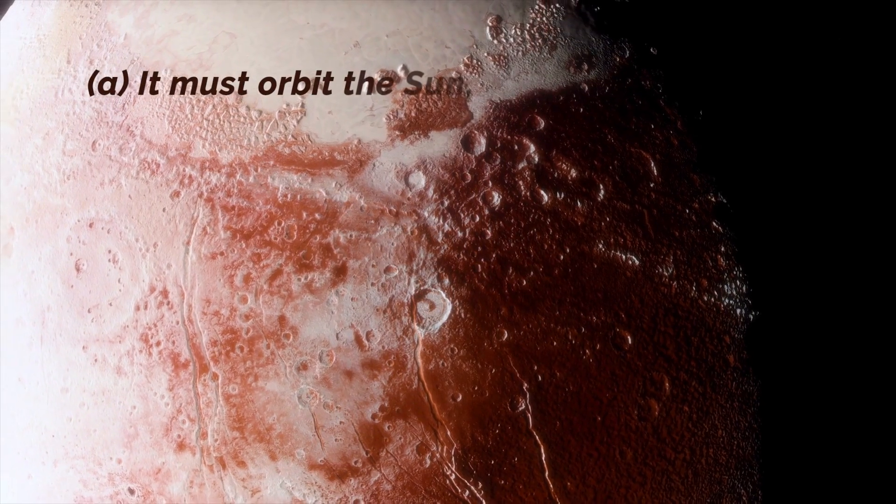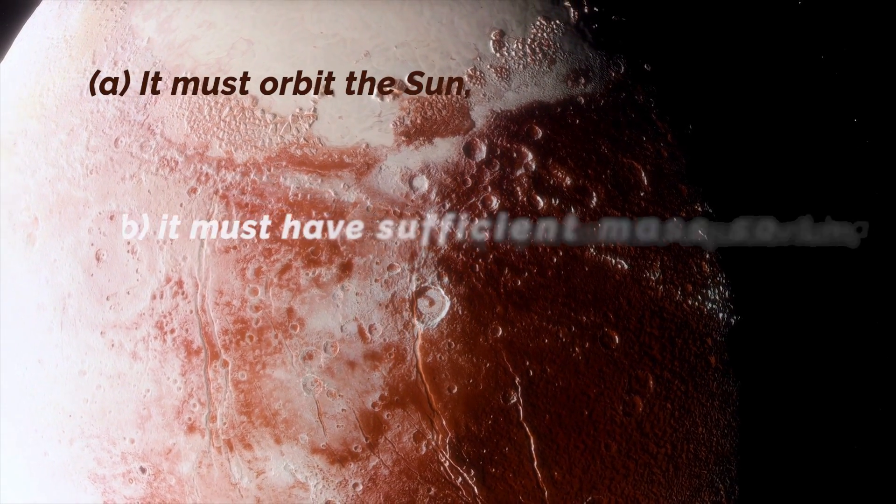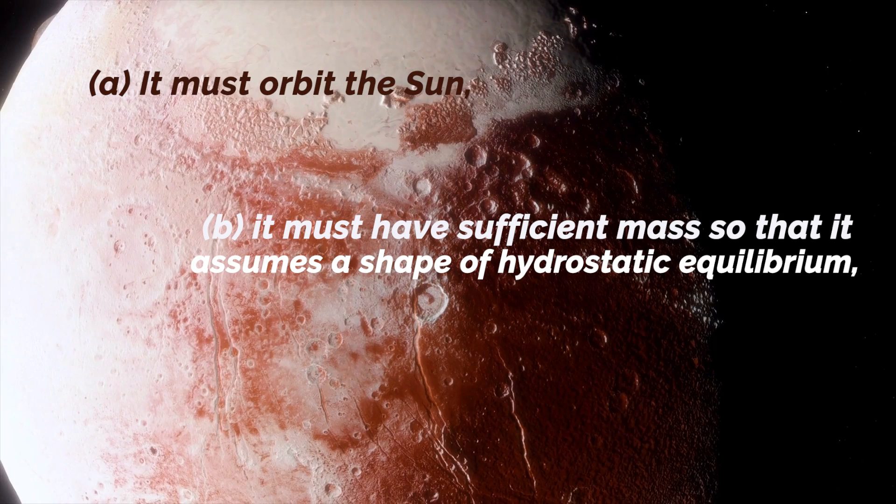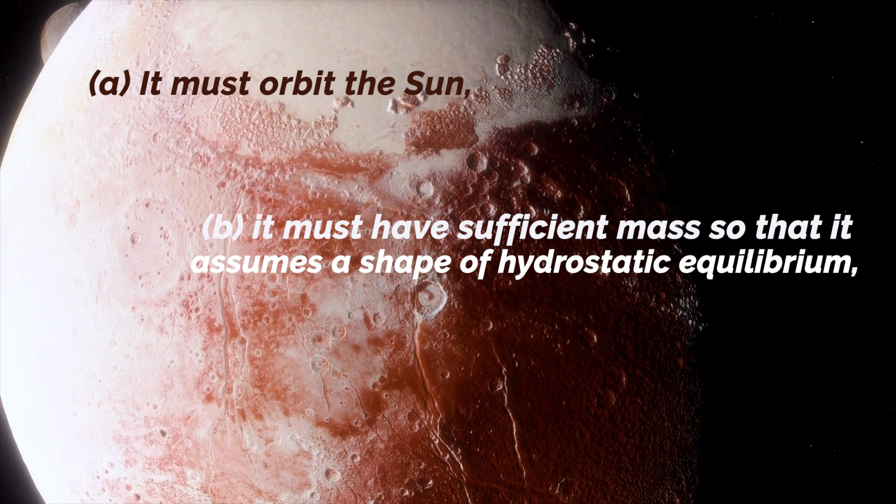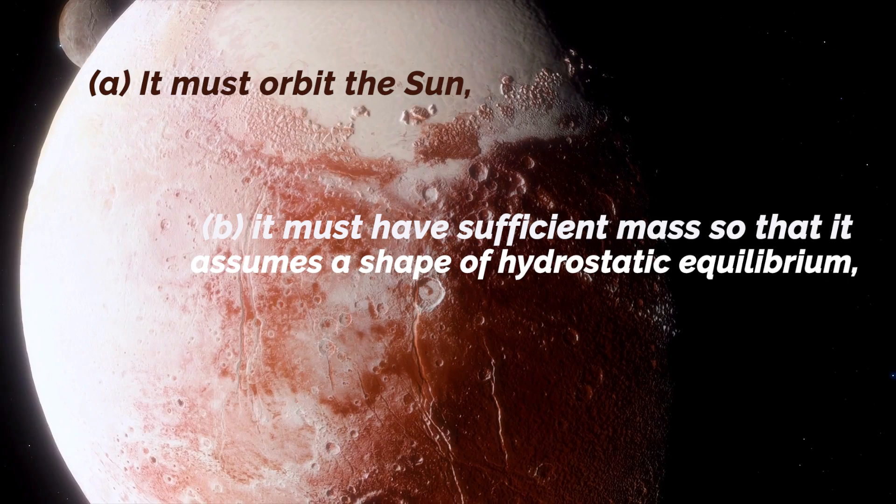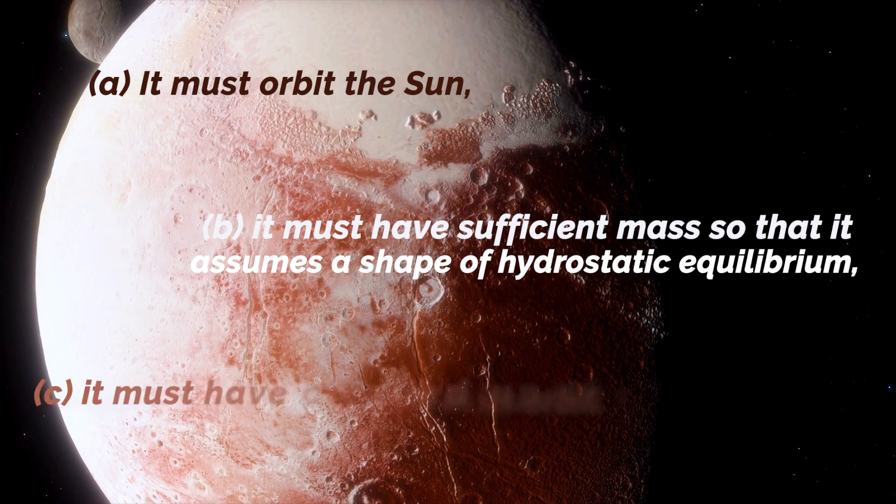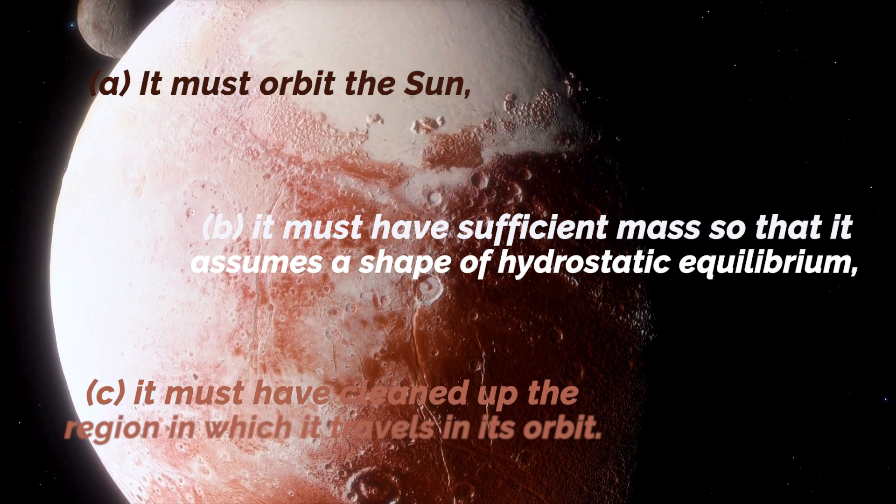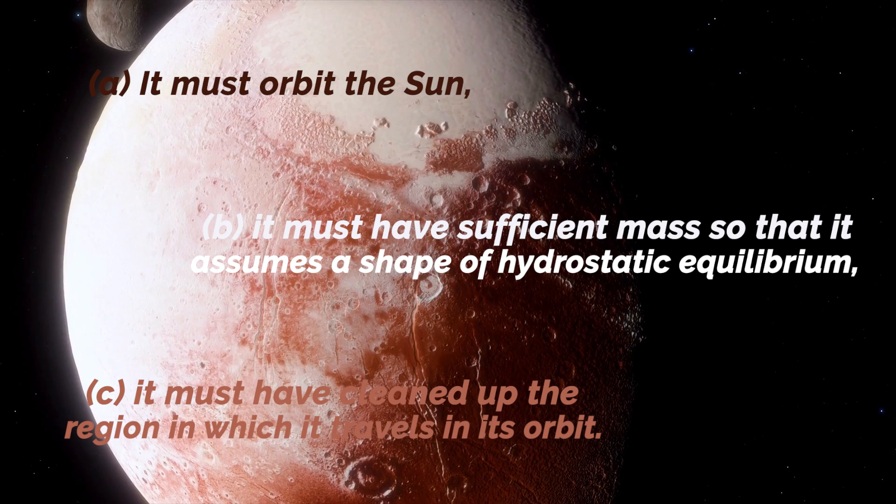A. It must orbit the Sun. B. It must have sufficient mass, so that its self-gravity overcomes the rigid body forces, so that it assumes a nearly spherical shape of hydrostatic equilibrium. C. It must have cleaned up the region in which it travels in its orbit.